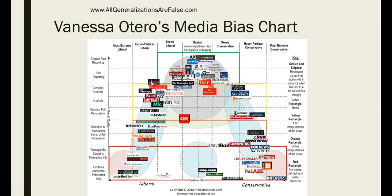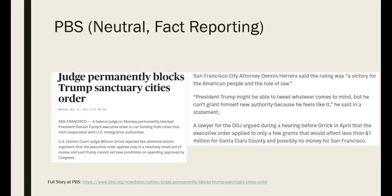Let's go into some specific story examples so you can start to look for and evaluate bias and journalistic quality in your own life, for both academic and non-academic reasons. This first example from PBS is from Otero's green zone — she classifies PBS under neutral and fact reporting. If we look at the tone of this story, it is informational. The journalist is presenting information and we don't know the journalist's opinion on sanctuary cities. We don't see any language that indicates value or judgment being placed on the information.